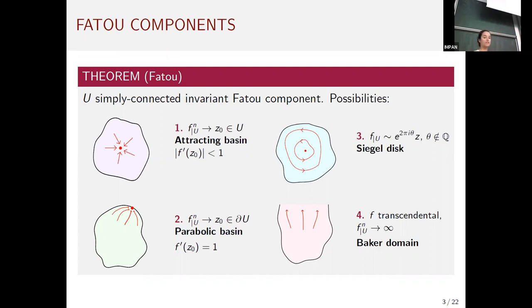Observe that since we are considering only the simply connected invariant ones, wandering domains are not inside this classification because they are not invariant, and Herman rings are excluded because they are not simply connected.